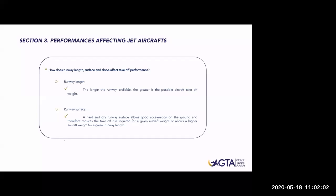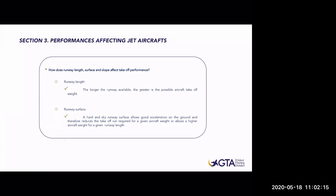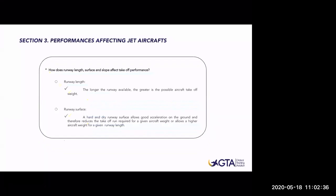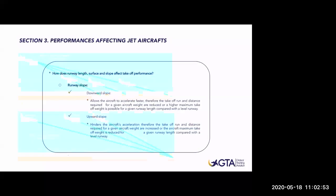Regarding how runway factors affect takeoff performance: the longer the runway available, the greater the possible aircraft takeoff weight. A hard, dry surface allows good acceleration and reduces takeoff run required. Downward slope allows the aircraft to accelerate faster, reducing takeoff run required for a given weight. Upward slope hinders acceleration, increasing the takeoff run required and reducing the maximum takeoff weight for a given runway length. This graph shows how flap setting affects landing performance — with flaps full, the landing point is closer to the threshold, while with flaps 3 the landing point is farther into the runway.